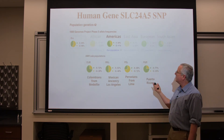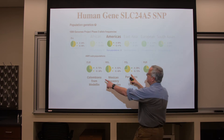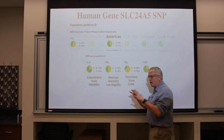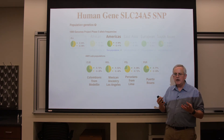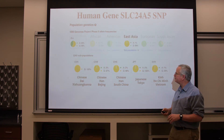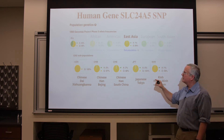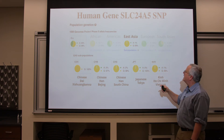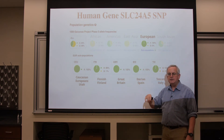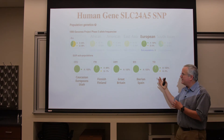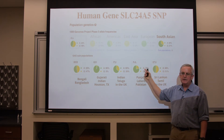Looking at the Americas — Colombia, Mexico, Peru, and Puerto Rico — we have quite a big difference. Colombia and Peru are almost mirror images of each other, showing that countries fairly close together can have differences, and this single letter influences roughly one-third of your skin tone. In East Asia it's almost exclusively G, just like Africa. In Europe it's almost exclusively A. In South Asia it's quite varied across different parts of the region.